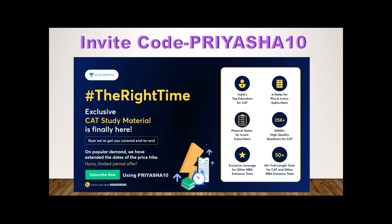Without paying any additional price, you'll be getting all these study materials which will have practice questions, theories, FAQs, tips, strategies—everything included under one umbrella, absolutely included in your subscription price. On popular demand, this offer has been extended but won't last for long. Make sure you check the link in the description box and enroll yourself into Plus or Iconic subscription using my code PRIYASHA10. That will give you an additional instant discount of 10% on your subscription along with this wonderful exclusive CAT material.